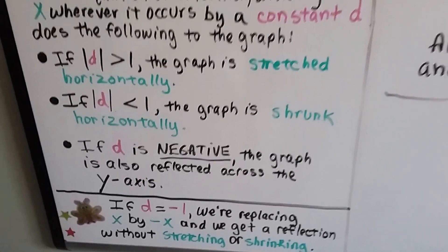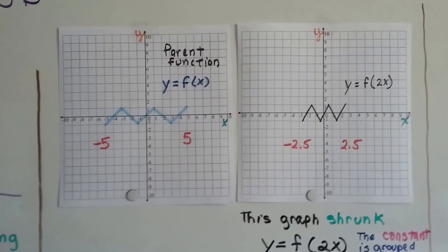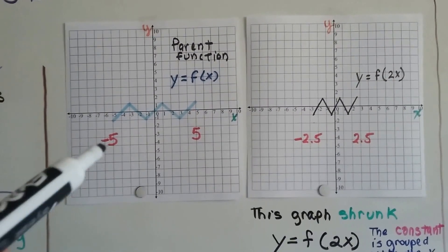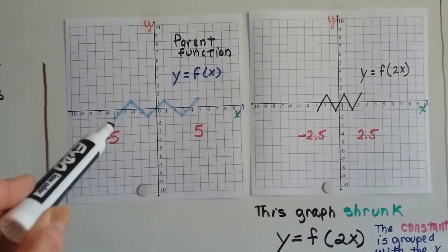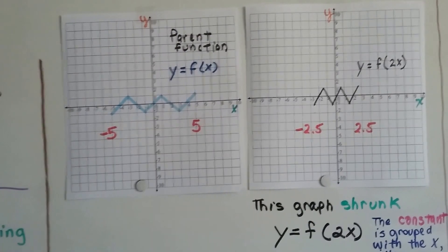Now I know this can sound confusing, but stay with me. So here we have two drawings. We've got the parent function, y equals the function of x, and we can see that it's at negative 5 on this side and 5 on this side.